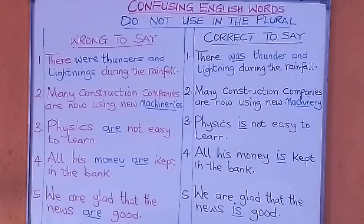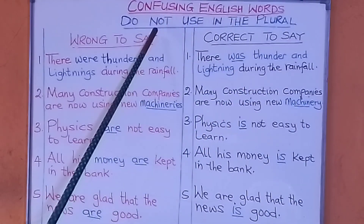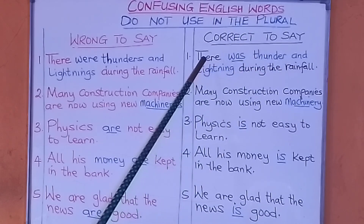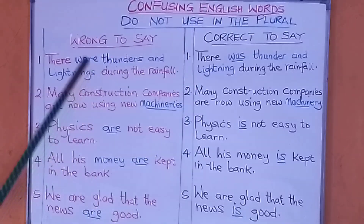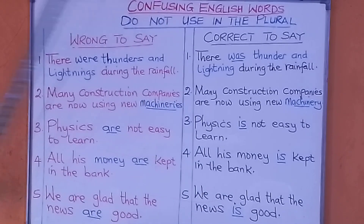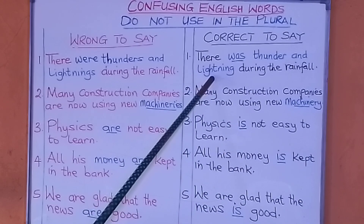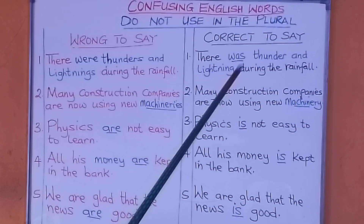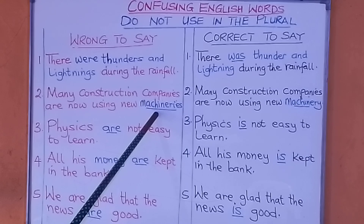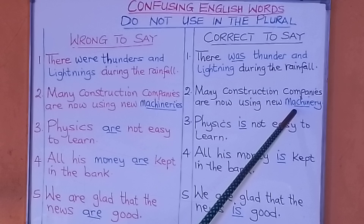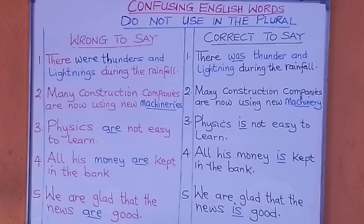Let's revise what we have learned. Confusing English words that we do not use in the plural: thunder and lightning remain thunder and lightning. You cannot use that in the plural form. But if you mean one thing, you can say 'a crash of thunder', 'two crashes of thunder', or 'ten crashes of thunder'. You can say 'a flash of lightning', 'two flashes', or '50 flashes of lightning'. Machinery is not used in the plural — you can say 'a piece of machinery' up to '50 pieces of machinery'.